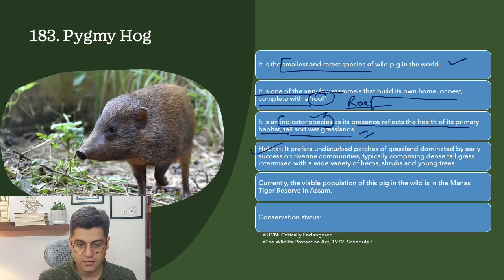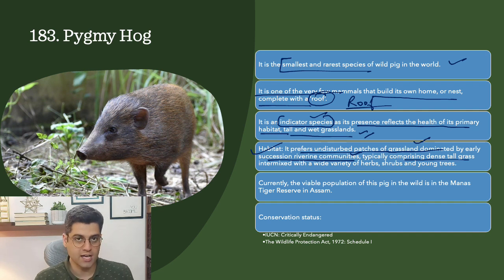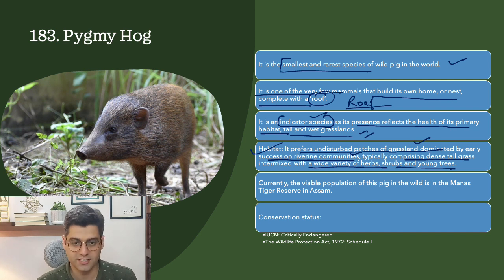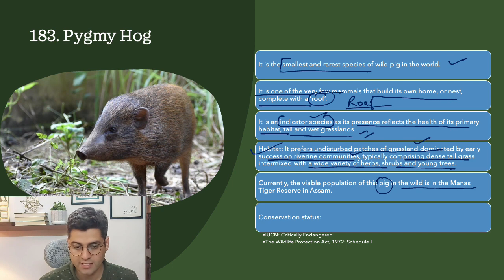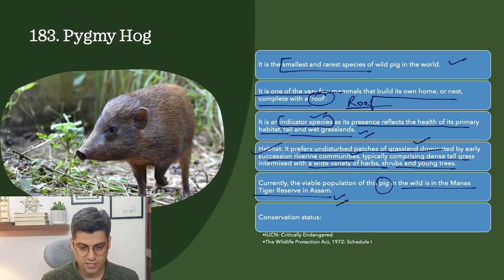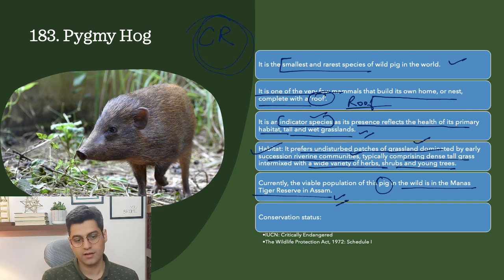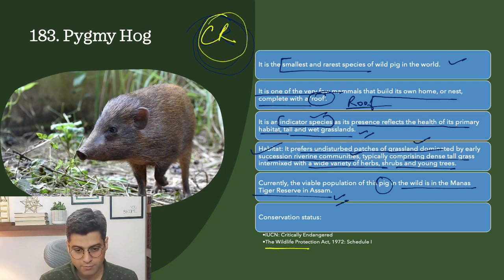It prefers undisturbed patches of grassland dominated by early succession riverine communities, typically comprising dense tall grass intermixed with a wide variety of herbs, shrubs and young trees. Currently, the viable population in the wild is in Manas Tiger Reserve in Assam. Conservation status: Critically Endangered. Wildlife Protection Act 1972 Schedule 1.